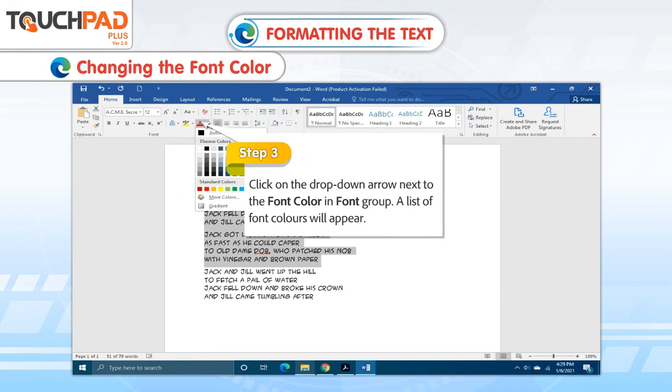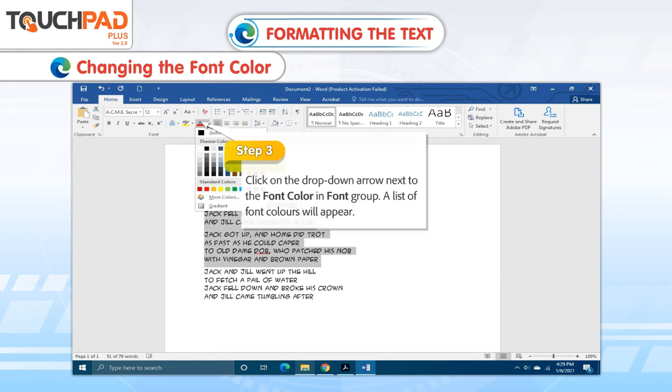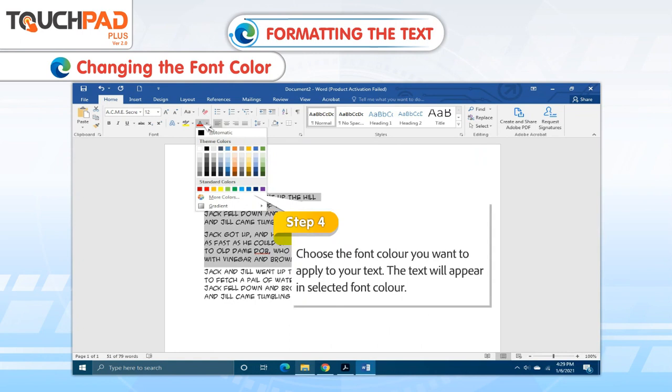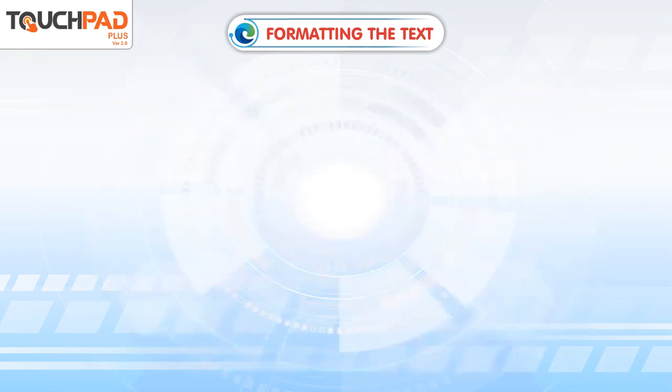A list of font colors will appear. Step 4. Choose the font color you want to apply to your text. The text will appear in the selected font color.